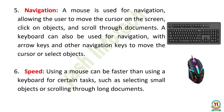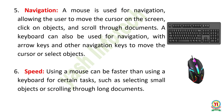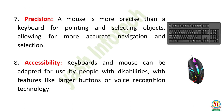Six, speed — a mouse can be faster than using a keyboard for certain tasks, such as selecting small objects or scrolling through long documents. Seven, precision — a mouse is more precise than a keyboard for pointing and selecting objects, allowing for more accurate navigation and selection.